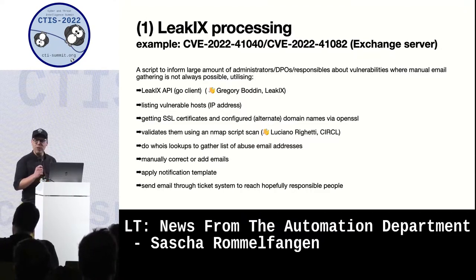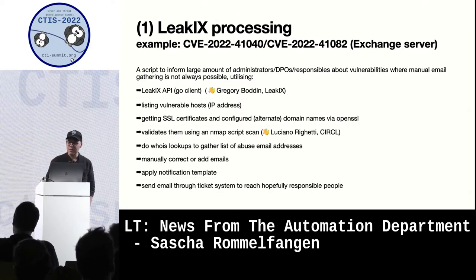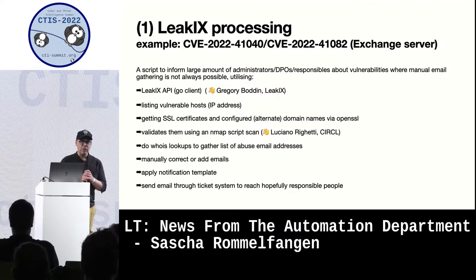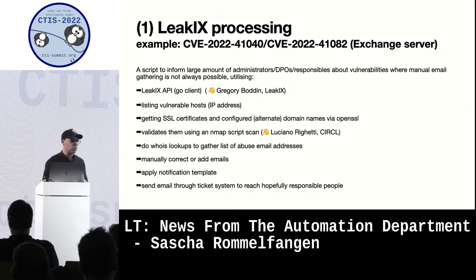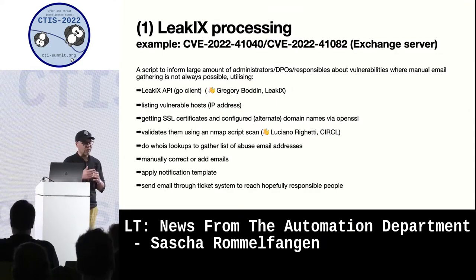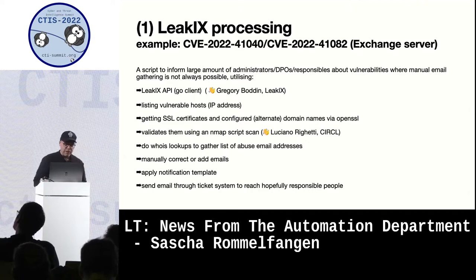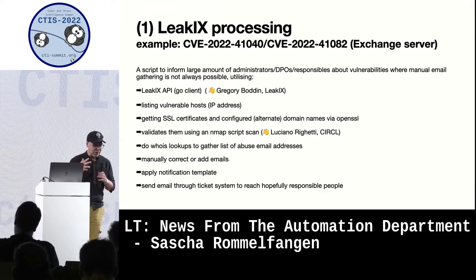So there is an example of how we use it at Circle. In this case, the Leakix data for something recent like Exchange Server vulnerabilities that we are informed about through Leakix. We get IP addresses and we want to inform the responsible people, and that's not always so easy, especially if you want to automate it, because with an IP address you can do DNS and whois lookups and get some information, but there is more to gather to reach the responsible people as quickly as possible.